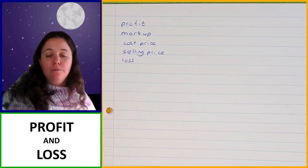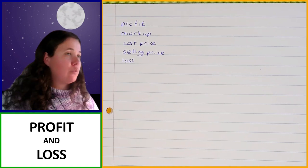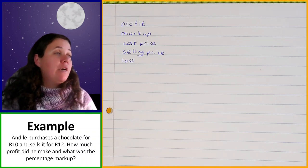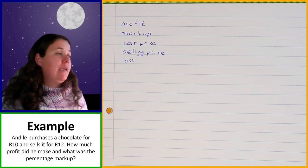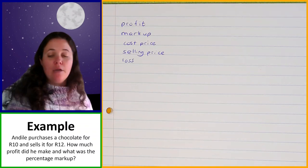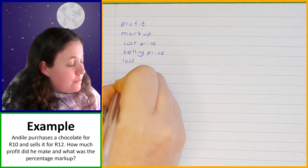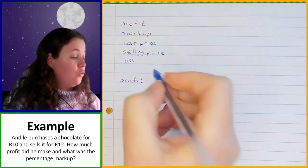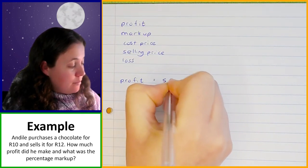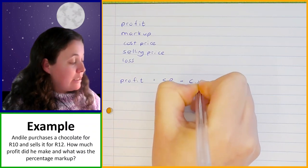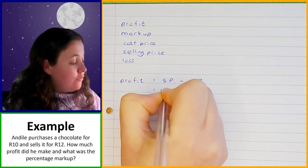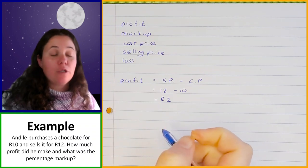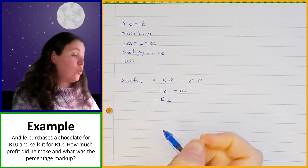So now let's have a look at an example where we are actually going to work out some things with profit and loss. In this example we've got Andile, who purchases a chocolate for 10 Rand and sells it for 12 Rand. How much profit did he make and what was the percentage markup? So first of all let's work out the profit. The profit we work out by taking the selling price minus the cost price. So that's going to be 12 minus 10, which is 2 Rand. So he made a 2 Rand profit on that chocolate — he bought it for 10 Rand and sold it for 12 Rand.